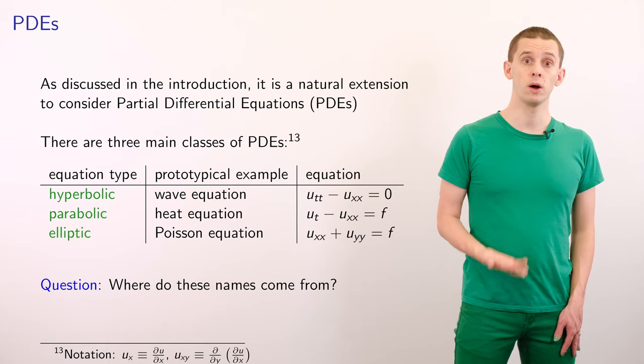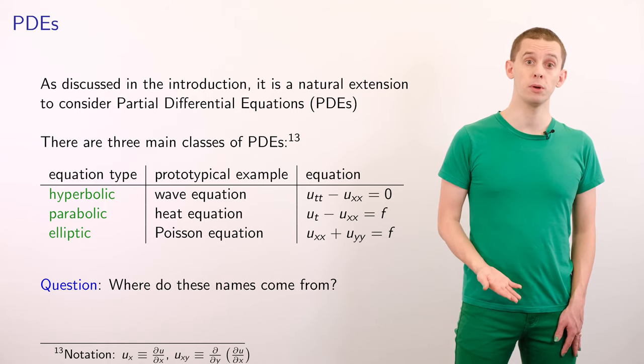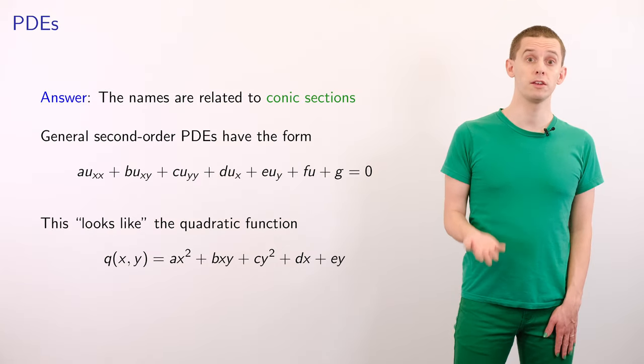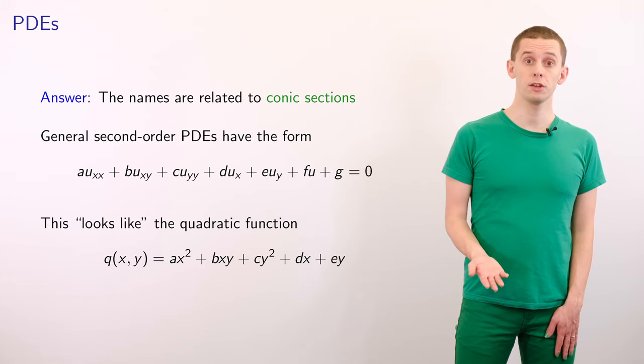And so we could ask ourselves, where do these names hyperbolic, parabolic, and elliptic come from? These names are related to conic sections. And to illustrate this, let's look at a general second order PDE that's a function of two variables x and y.